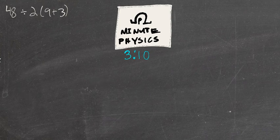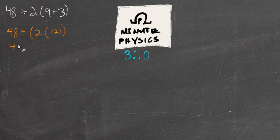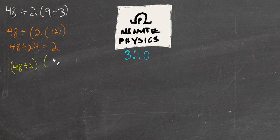And while I can take this problem and I can work it out this way: 48 divided by 2 times when 9 plus 3 is 12, so 48 divided by 24 and I can get 2.